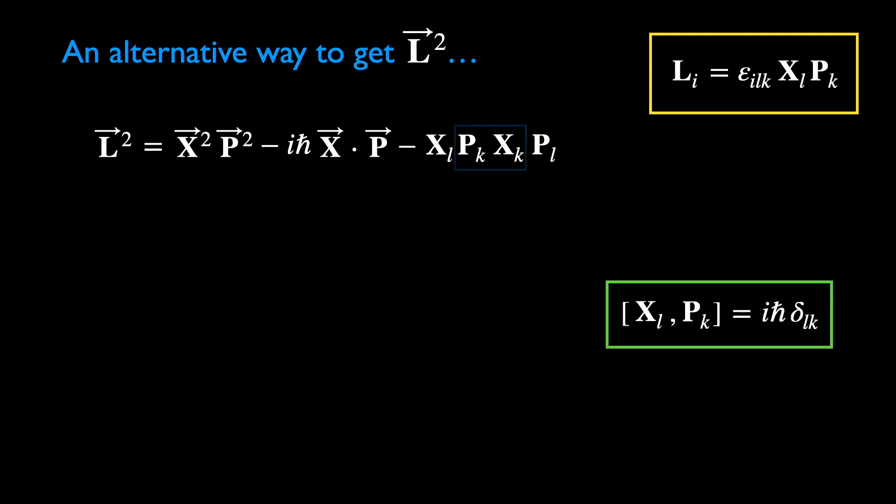Moving on to the next term. Note that because k is a repeated index by Einstein's convention, there are actually three terms. So we get a factor of three with the ih-bar.